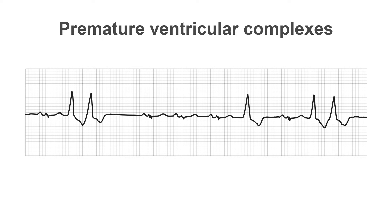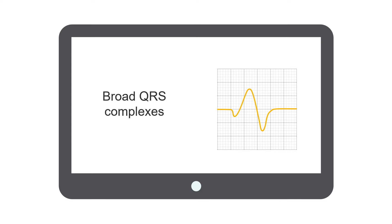Premature ventricular complexes or contractions — abbreviated to PVCs and also sometimes called ventricular ectopic beats — are another common finding on Holter recordings. They're identified as broad QRS complexes lasting more than 120 milliseconds, and their abnormal morphology varies according to their point of origin within the ventricles. They occur prematurely, earlier than the next normal beat would have occurred, and are usually followed by a compensatory pause.